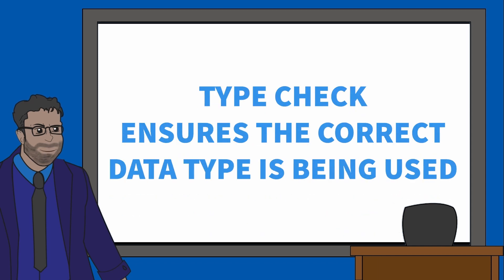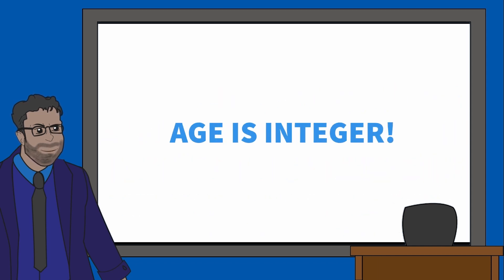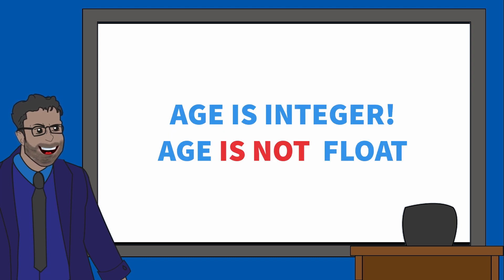Type check is used to ensure the user enters an appropriate data type. For example, if the user is asked for their age, we want to make sure they enter an integer and not a float or a colour.